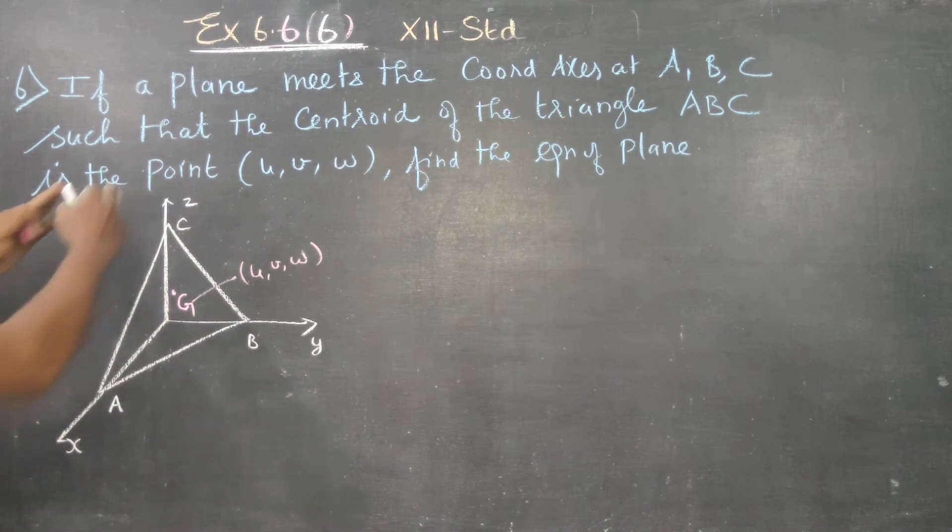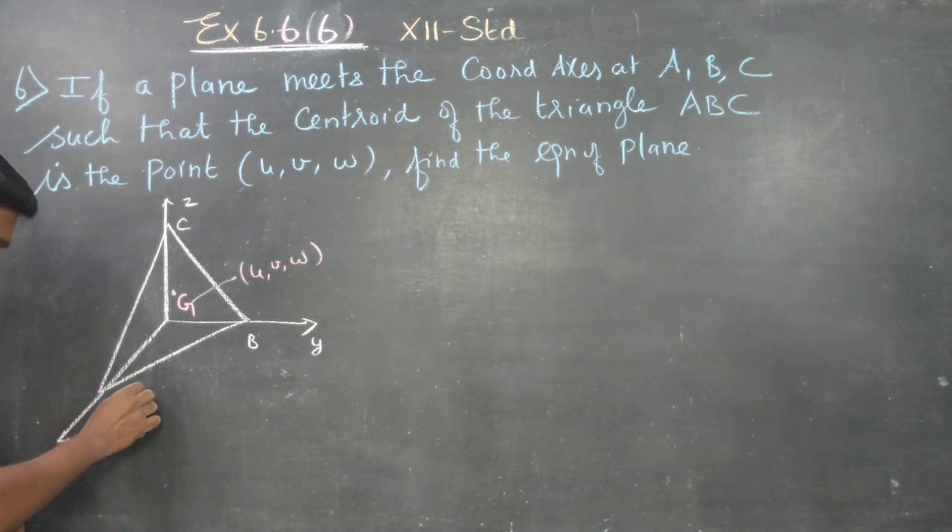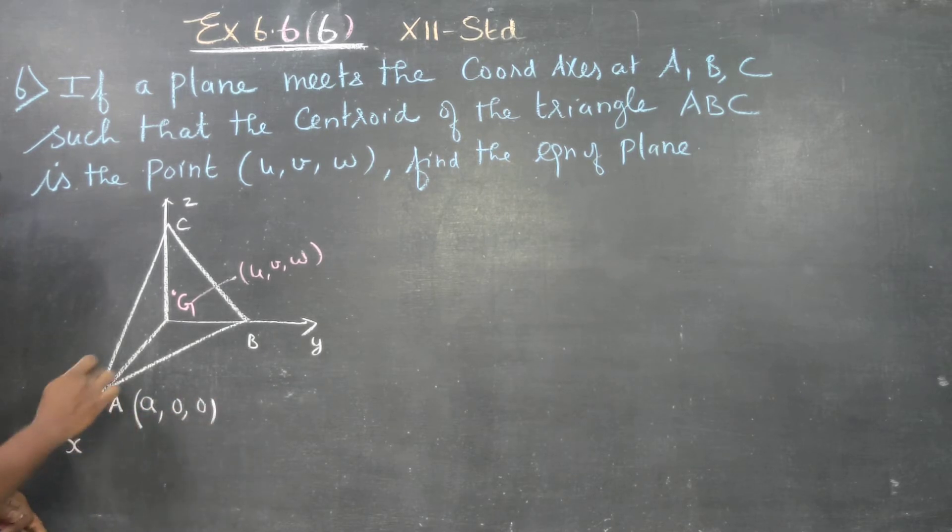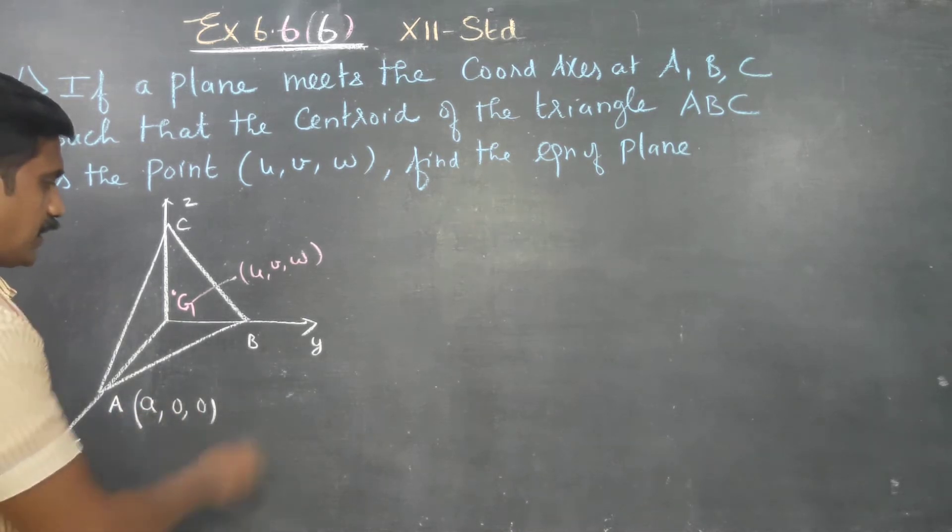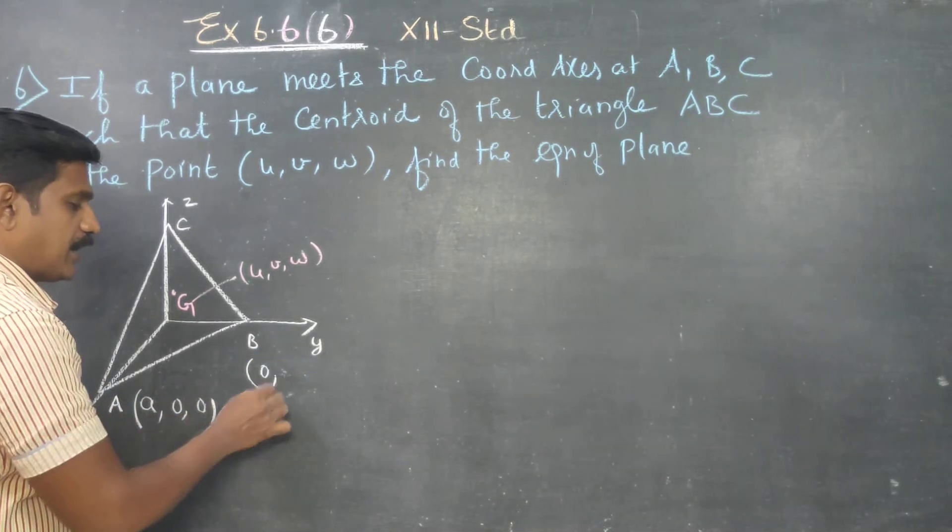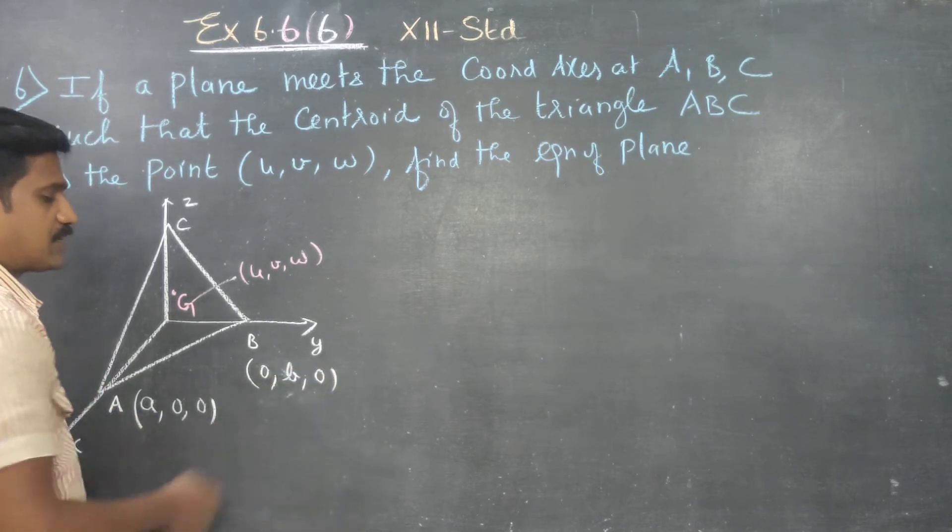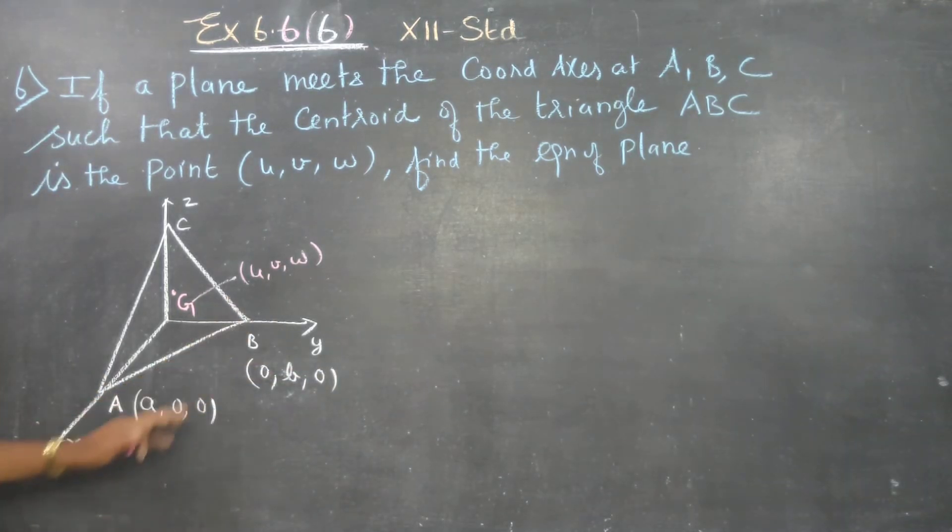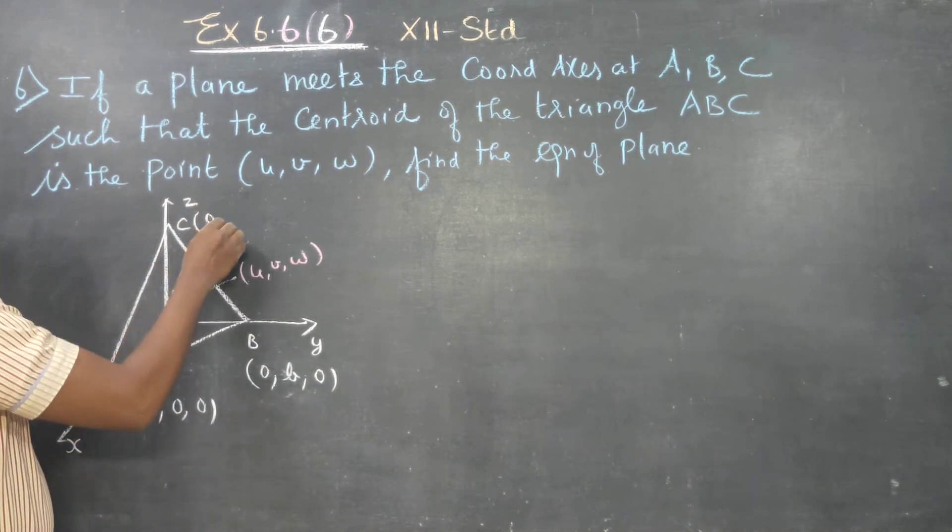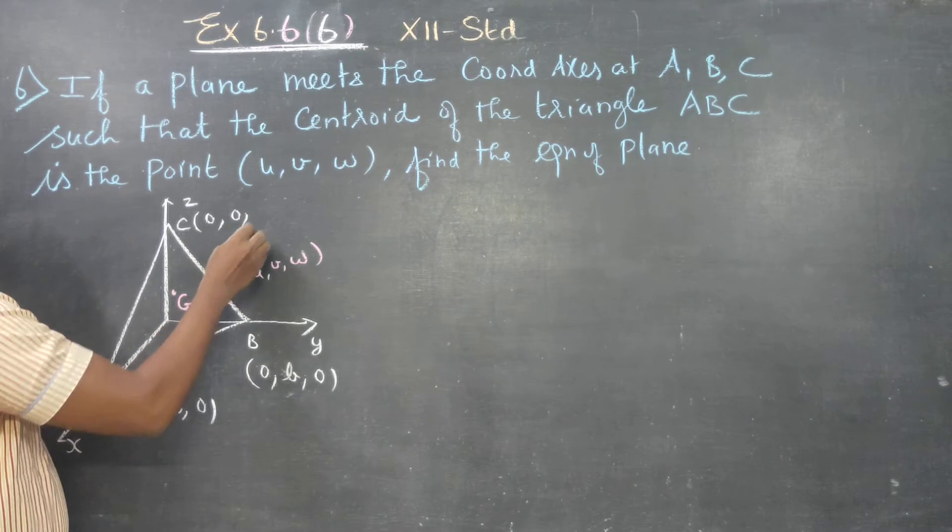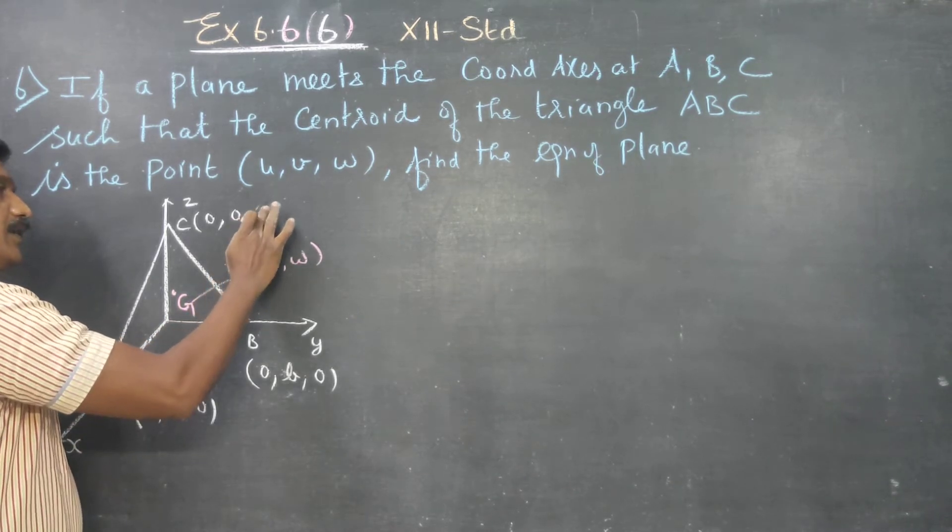When the plane meets the X axis at point A, the Y and Z coordinates are zero. When it meets the Y axis, X and Z coordinates are zero. When it meets the Z axis, X and Y coordinates are zero.